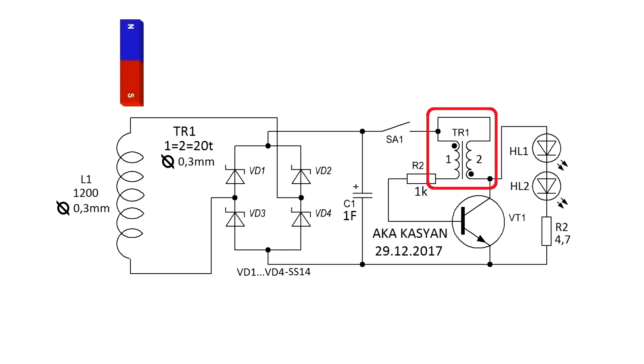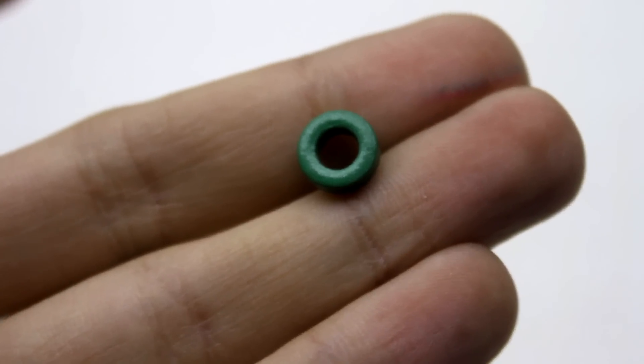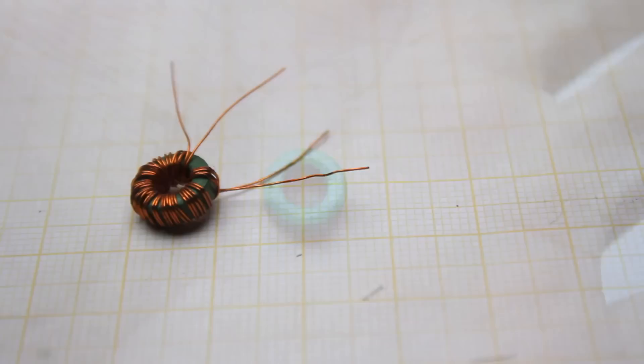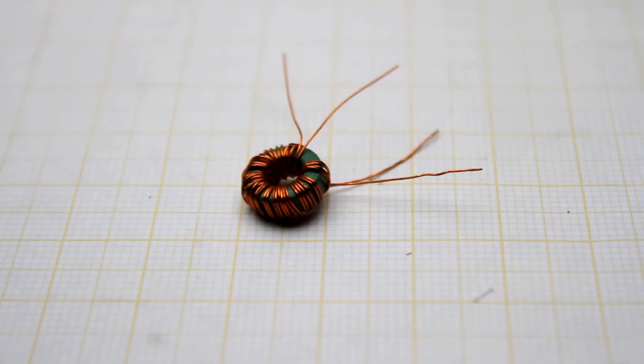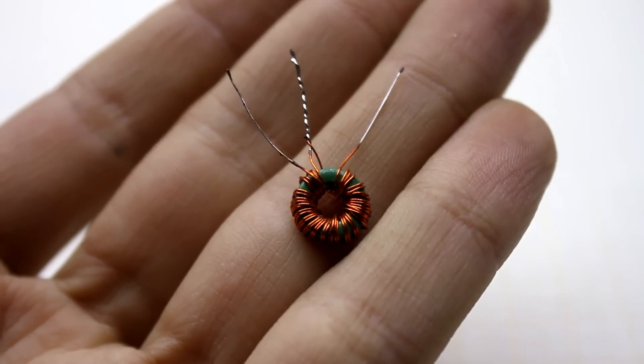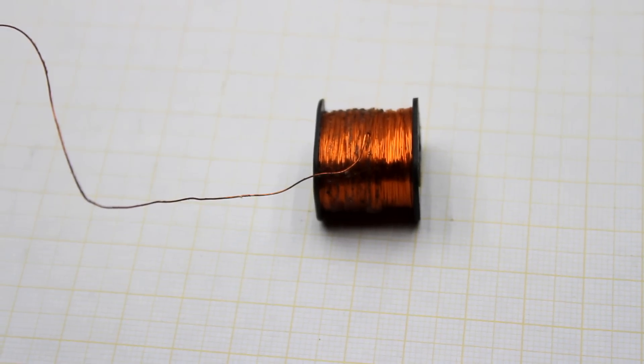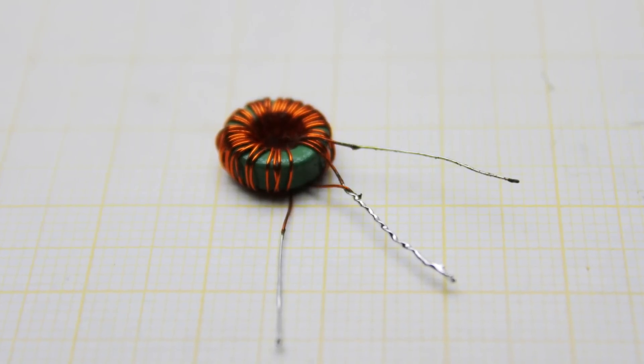The transformer is wound on a ferret ring, which can be found in all the ballasts of compact fluorescent lamps, but the dimensions of the ring aren't critical. For the convenience, both windings are wound with the same wire and contain the same number of turns. The wire diameter in my case is 0.3 mm, and the number of turns is 20.